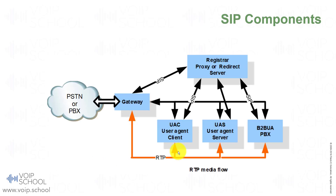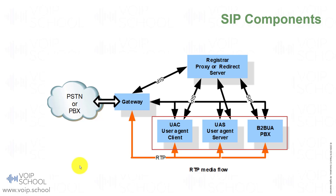SIP components. The SIP architecture is composed of several components. First, SIP devices such as IP phones and soft phones, also known as user agents. They are user agent clients when starting a call, and user agent servers when answering a call. From now on, we are always going to call these UAC, the user agent client, and UAS, the user agent server.